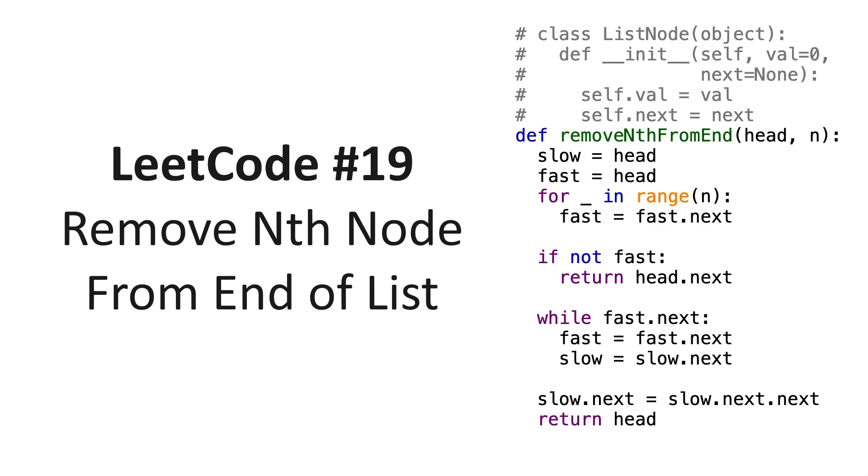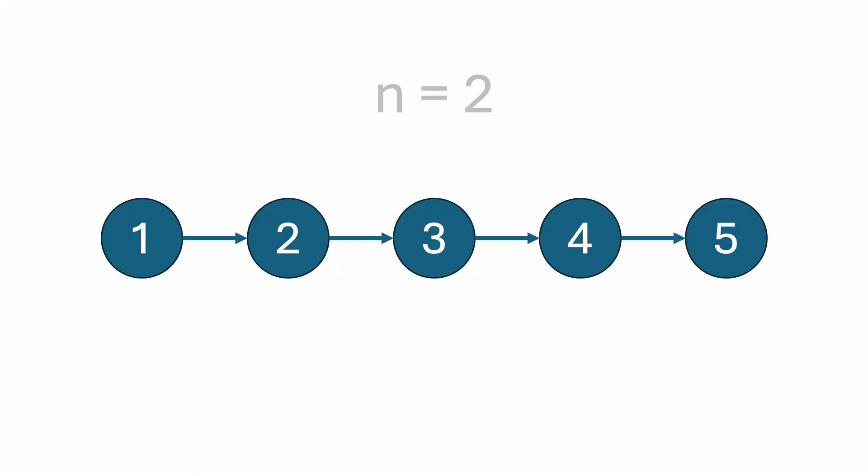For example, let's say this is the linked list we are given, and n equals 2. So we'll need to remove the second node from the end of the list, which is node number 4. Once it's removed, node 3 should point to node 5 instead. So the linked list goes from 1, 2, 3, to 5, and this is the linked list that we would return.